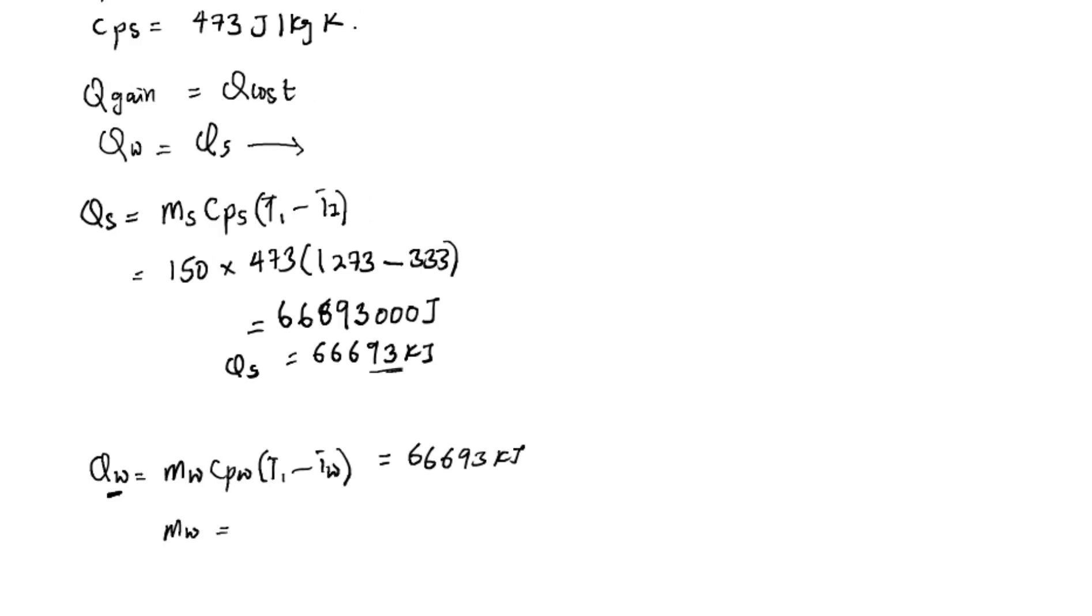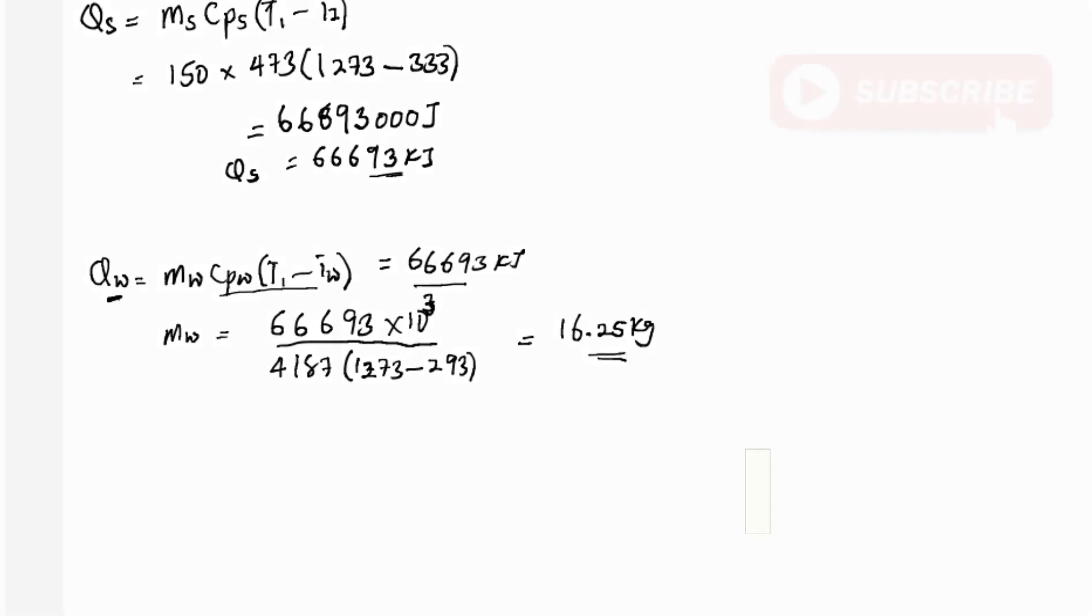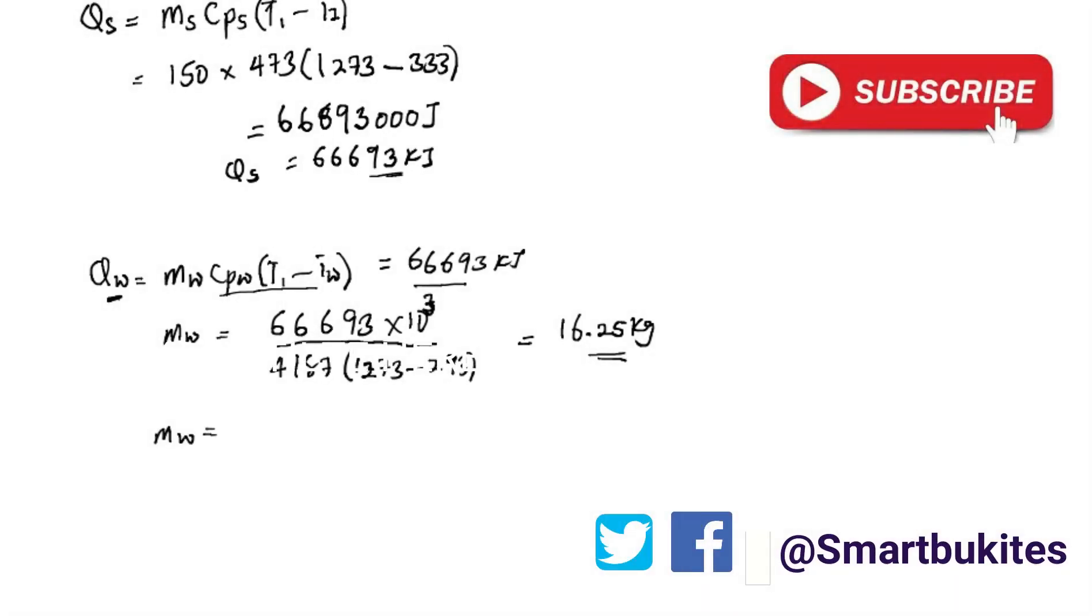To find the mass of water, we divide by the specific heat capacity of water, which is 4187, multiplied by the change in temperature, which is 1273 minus 293. At the end we are going to have 16.25 kg. This is the mass of water necessary to quench the steel.